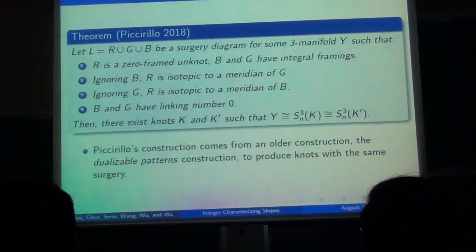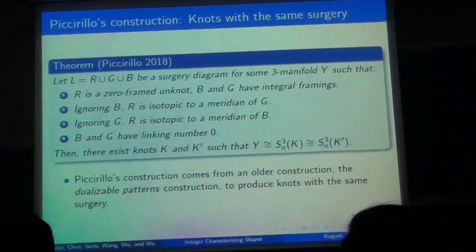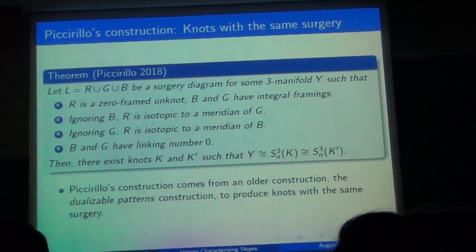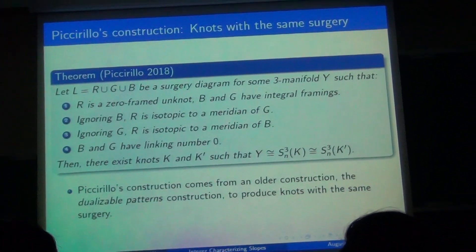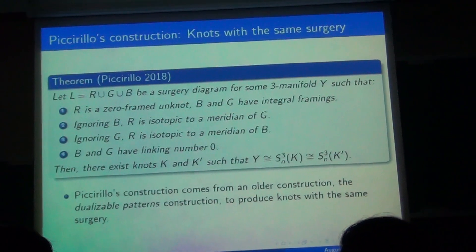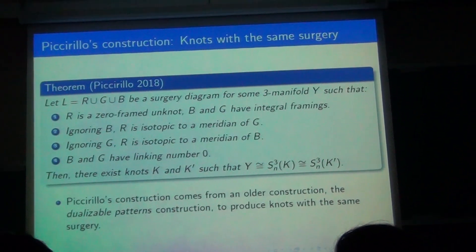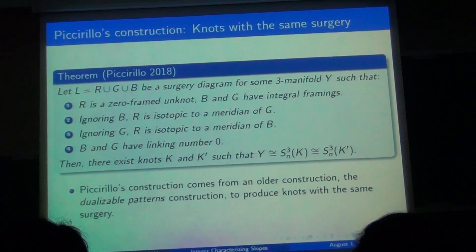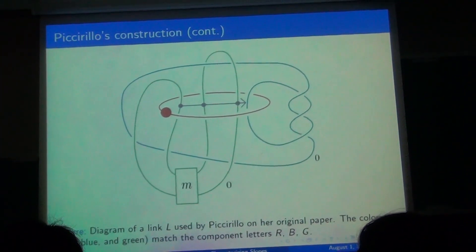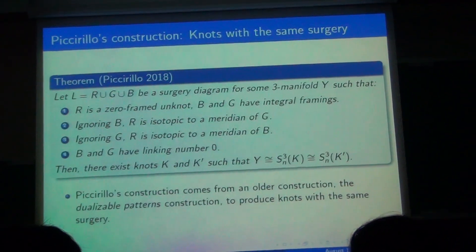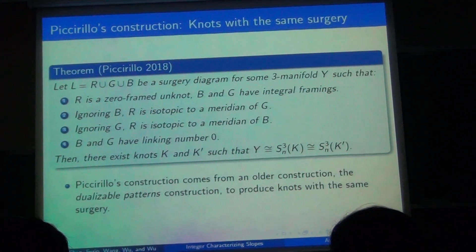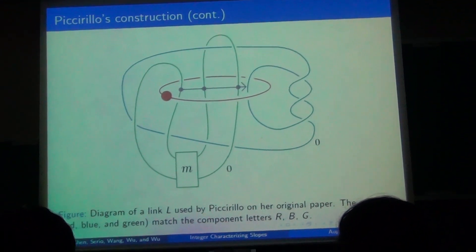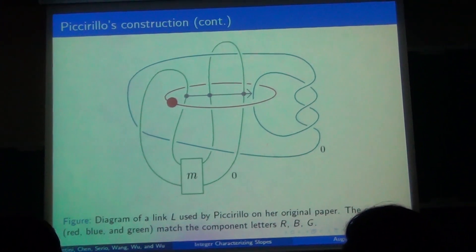So basically, L is a surgery diagram for some three-manifold Y with components red, blue, and green. R is a zero-framing knot, while B and G have integral framings and a linking number of zero. If we ignore either B or G, then R becomes isotopic to the other. Following these conditions, we can produce knots K and K prime by handle sliding and removing two components. The resulting knots will be homeomorphic to each other under n surgery.